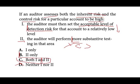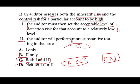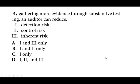Simply put: if inherent risk and control risk are both high, you must set detection risk low. This is covered in much more detail in my lectures on the website. The audit risk model is covered in depth, as if it's the first time you're sitting in your college class. Let's take a look at the next question: by gathering more evidence through substantive testing, an auditor can reduce what?